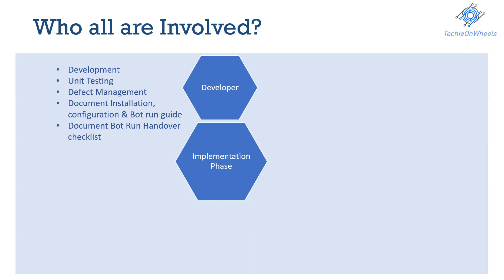Once the bot is developed, developers do the unit testing of the modules they developed. While doing that unit testing or during UAT testing, whatever defects come up, developers fix them and move it back for testing. This goes in a cycle until the entire bot developed is robust and working as expected and as drafted in the design phase.